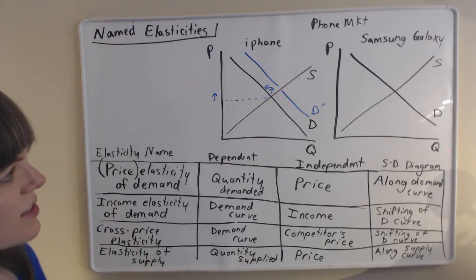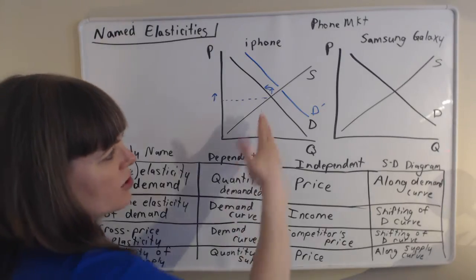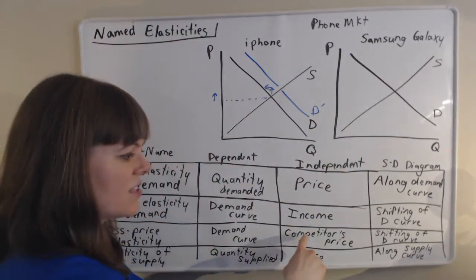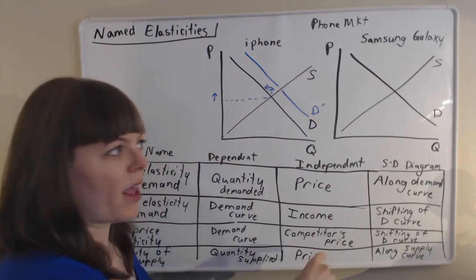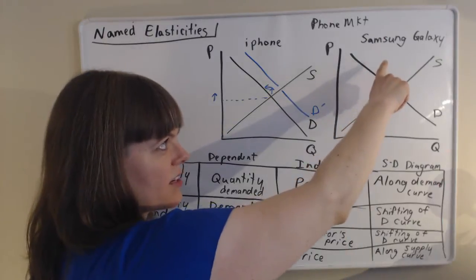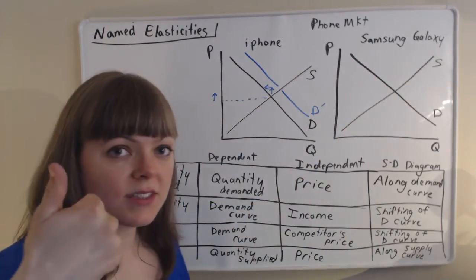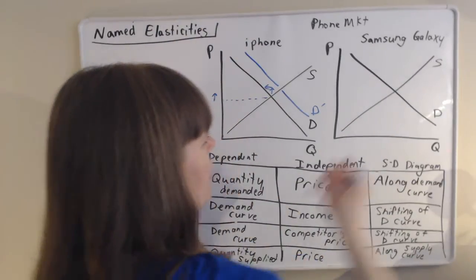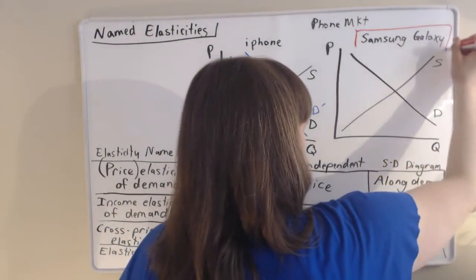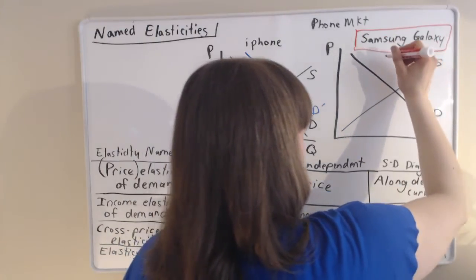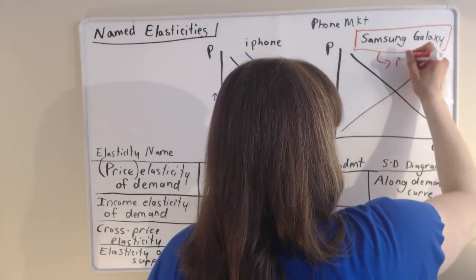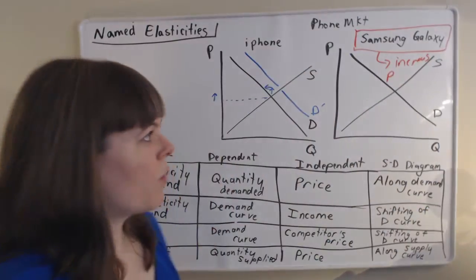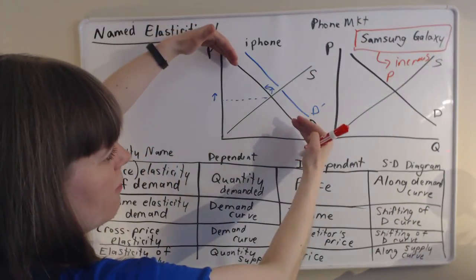Cross price elasticity of demand, this one is also going to measure how much does the demand curve shift. But in this case, it's in response to the competitor's price. So if Samsung decides to increase their price, what do we expect to happen to the demand curve? Let me do this one in red so that it's a different color. So Samsung decides to increase their price.